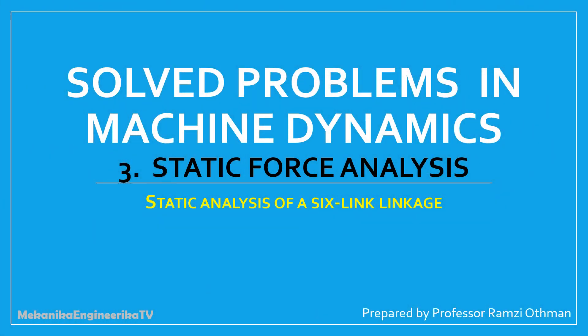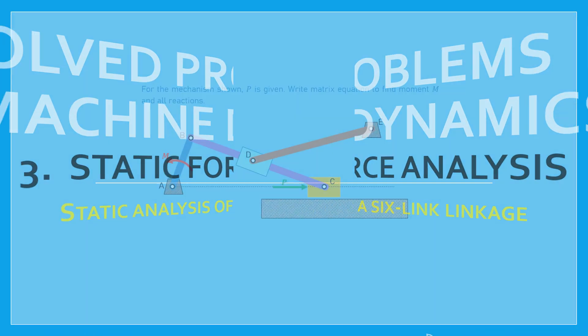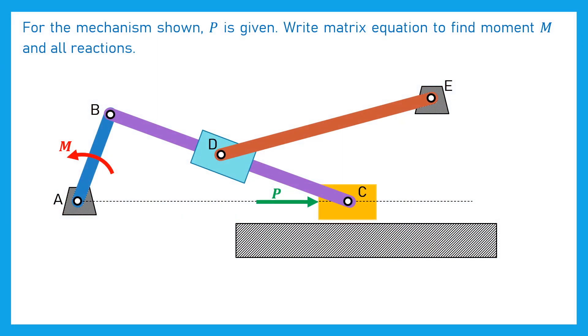This video is part of a series presenting solutions of problems related to the machine dynamics topic. This video presents the solution of a problem dealing with the static analysis of a 6-link linkage. For the mechanism, it is asked to write a matrix equation to find the moment and all reactions when the external force P is given.